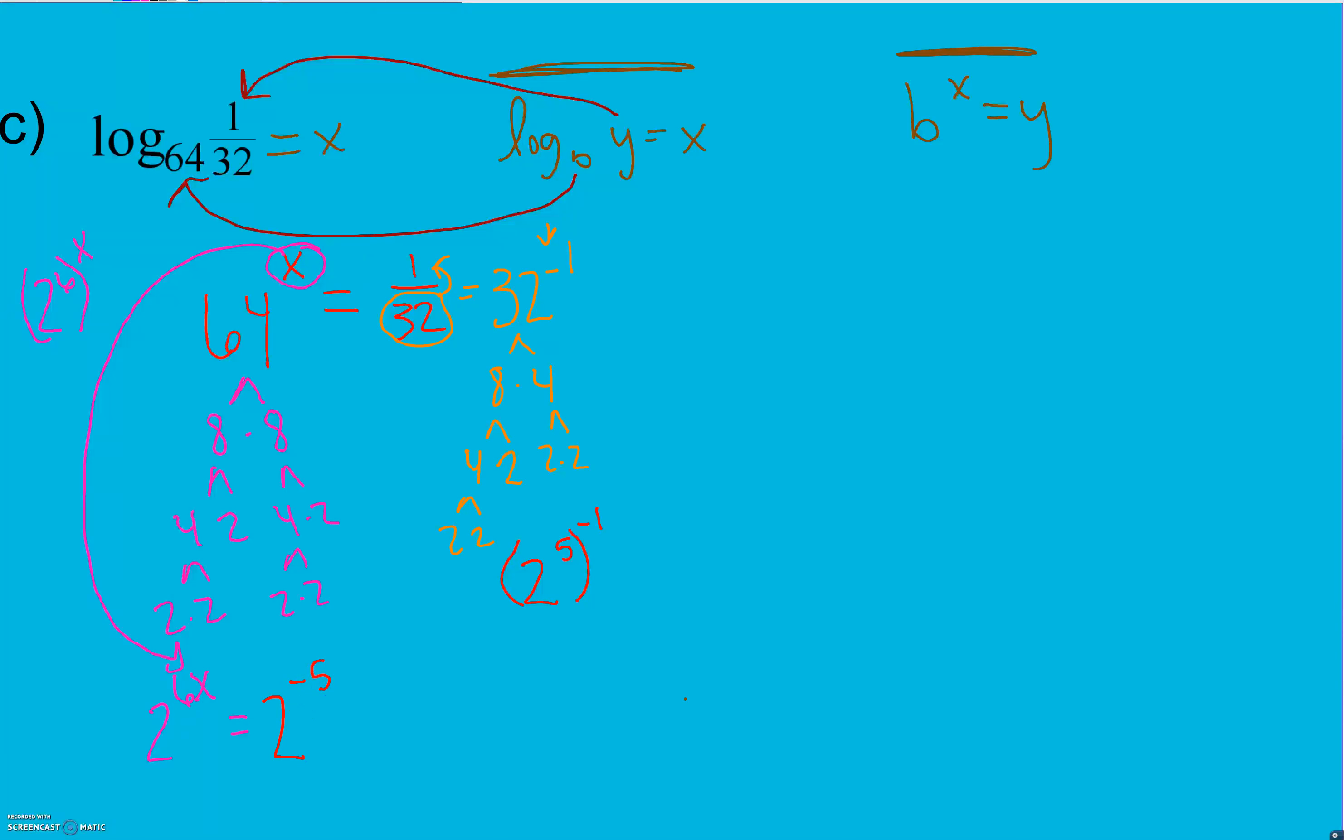Now we have the same base. So whenever our bases are the same, we can set our exponents equal to each other. We're going to take 6x equals negative 5, divide by 6 to get that x by itself, and we get negative 5 over 6. So that is what x equals, which means log base 64 of 1 over 32 equals negative 5 over 6.